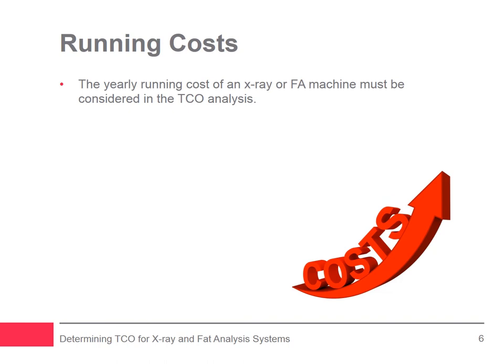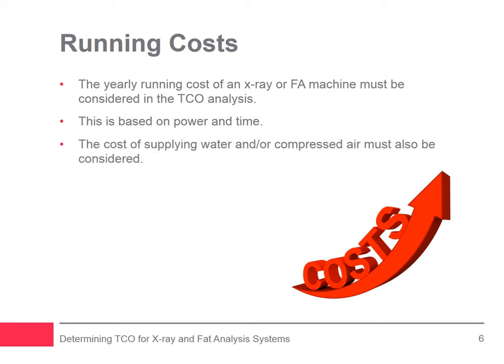The yearly running cost of an X-ray or FA machine must be considered in the TCO analysis and is based on power and time. In addition, if the machine requires water or compressed air to be supplied for normal operation, the cost of supplying these should also be included.